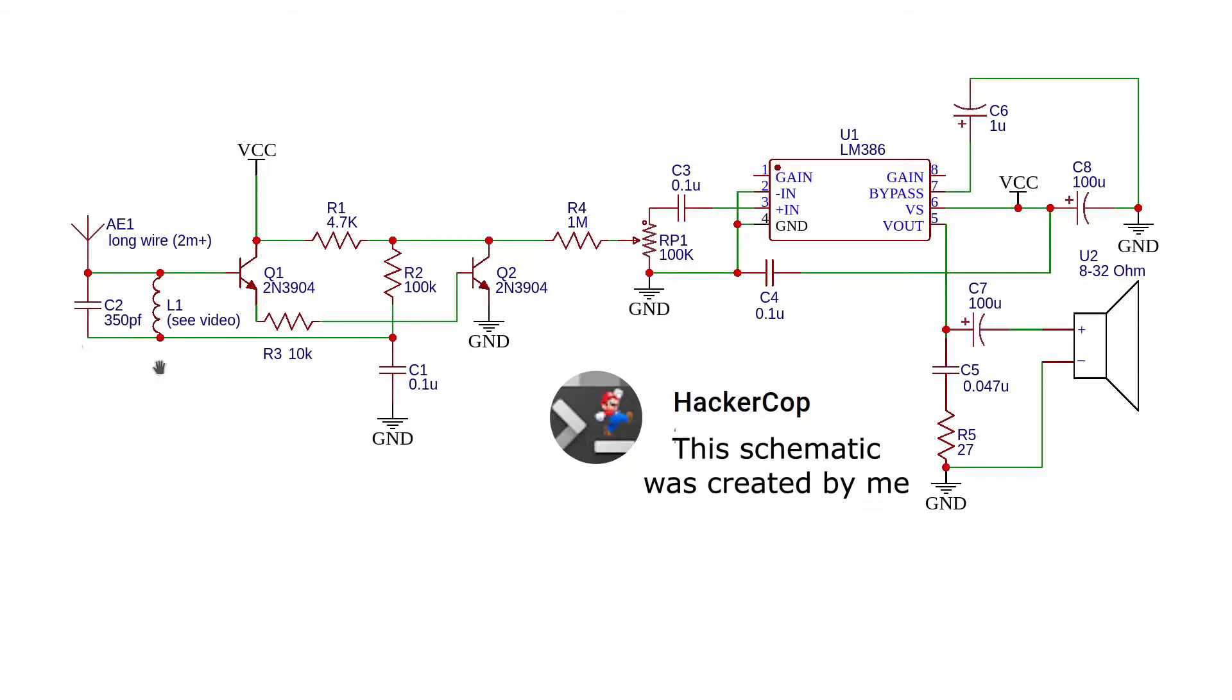We control the frequency by changing the inductance of the inductor, by moving that ferrite rod in and out. When we have a frequency that resonates the same as our radio station, we get resonance, so it's very strong, and it tunes out all other frequencies. This is how we are able to tune to our radio station very strongly without noise or other problems.